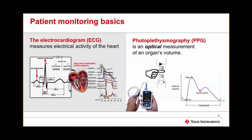Pulse oximeters use two specific wavelengths of light: red at 660 nanometers and infrared at 940 nanometers. The absorption at each wavelength allows physicians to isolate light absorbed by arterial blood from venous blood and other tissues. This is primarily used as an indicator of oxygen concentration in the patient's bloodstream. When measured simultaneously with ECG, both waveforms can be overlaid — they will have the same period, allowing heart rate determination. The time difference between the ECG peak and the PPG peak is called pulse transit time, which can be used to calculate systolic blood pressure and other parameters.